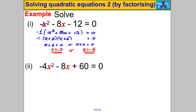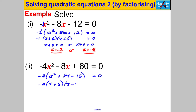For the next example, factorize out negative 4. That gives x² + 2x − 15 = 0, because: negative 4 times x² = negative 4x², negative 4 times positive 2x = negative 8x, and negative 4 times negative 15 = positive 60. When factorizing out a negative, negative terms become positive and positive terms become negative. Factorize the bracket to get (X + 5)(X − 3) = 0, so X = negative 5 or X = positive 3.